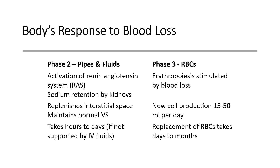In phase three, another compensatory mechanism occurs: stimulation of erythropoiesis from blood loss. Erythropoietin is made by the kidneys and stimulates the long bones of the body to produce red blood cells. When circulating RBCs drop to a certain point, erythropoiesis kicks in through a complicated mechanism. New cell production can be anywhere from 15 to 50 mils of blood per day, which is not a great deal but helps over time. However, replacement of a significant loss of red blood cells takes months rather than days.